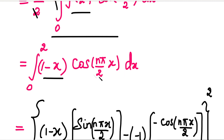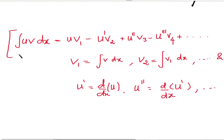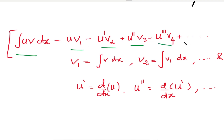Now to integrate aₙ, we have a formula. Here we have a polynomial multiplied by a cosine function. When you have a polynomial times a cosine, or polynomial times sine, or polynomial times exponential function, we use Bernoulli's formula. Bernoulli's formula states: ∫uv dx = u·v₁ - u'·v₂ + u''·v₃ - u'''·v₄ + ... (alternating positive and negative signs).